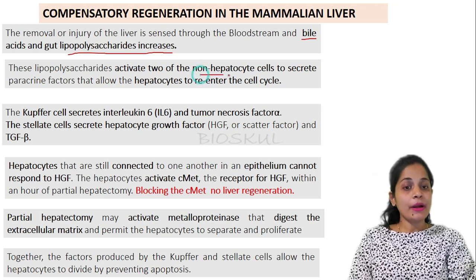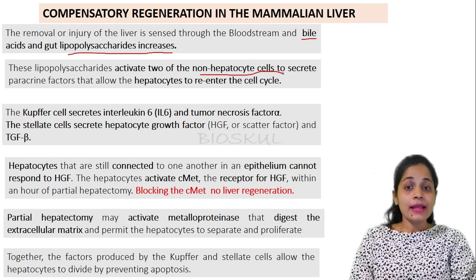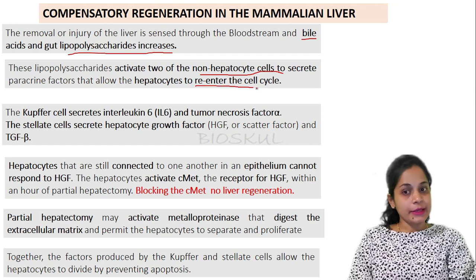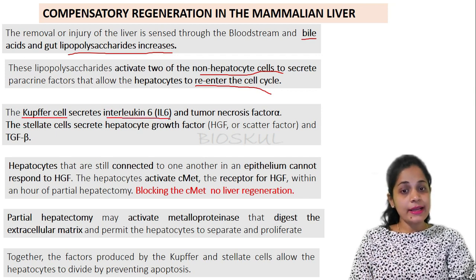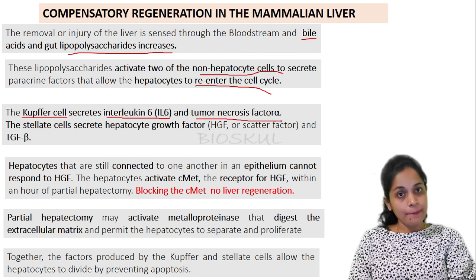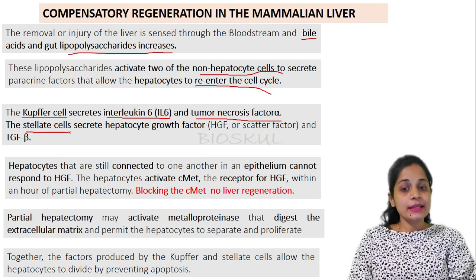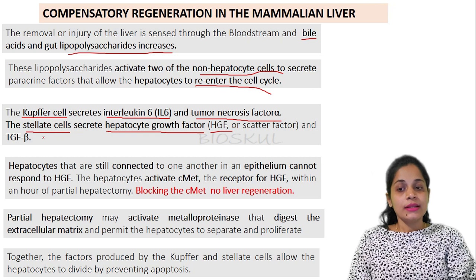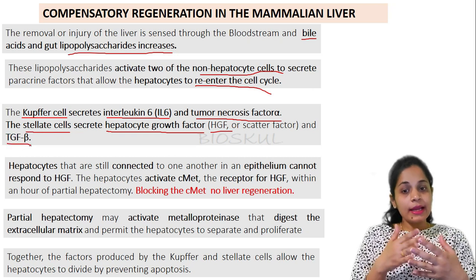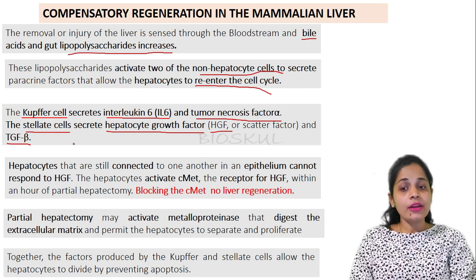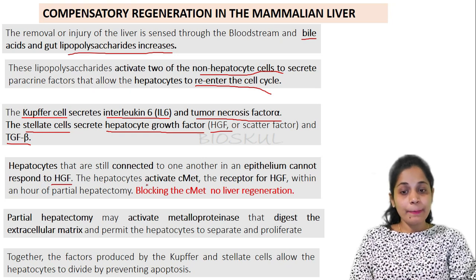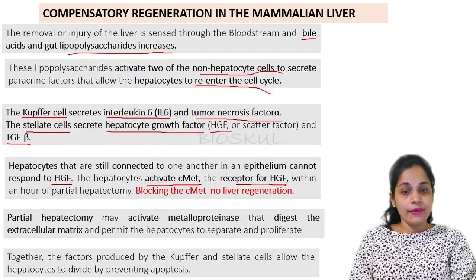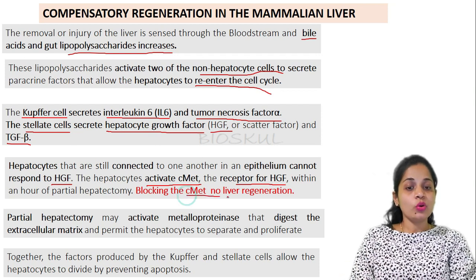If there is removal or injury to the liver, it is sensed through the bloodstream and bile, and gut lipopolysaccharide secretion increases. These lipopolysaccharides activate two non-hepatocyte cells to secrete paracrine factors that allow hepatocytes to enter the cell cycle. The first cell is the Kupffer cell, which secretes interleukin-6 (IL-6) and tumor necrosis factor alpha. The other cell, the stellate cell, secretes hepatocyte growth factor (HGF) and TGF-beta. After partial hepatectomy, hepatocytes activate c-Met, which is the receptor for HGF. If c-Met is blocked, there will be no liver regeneration.